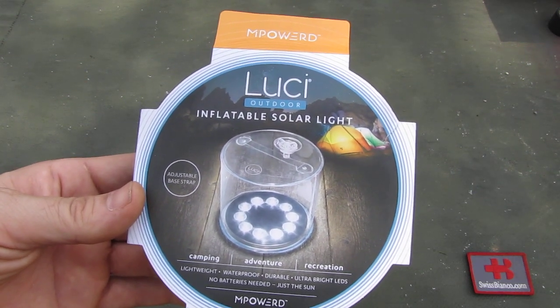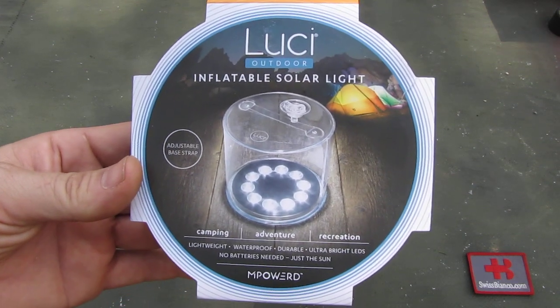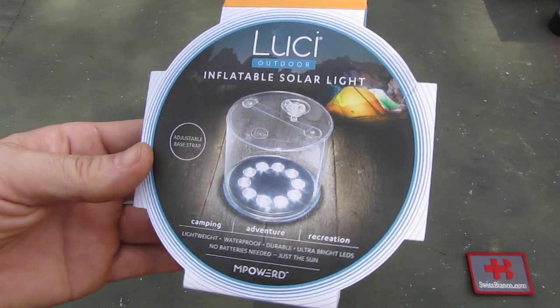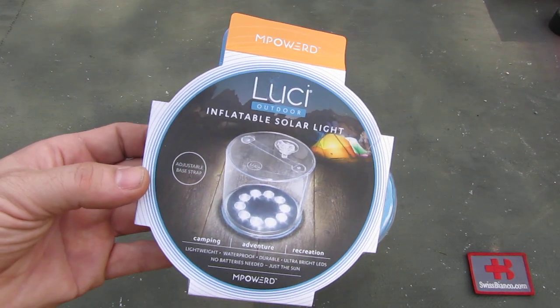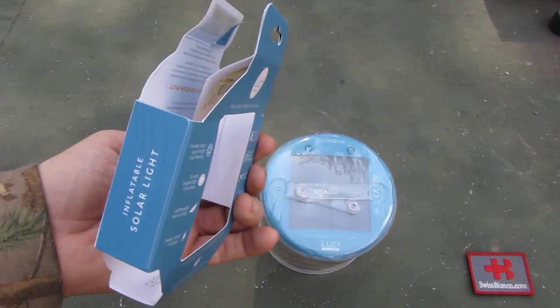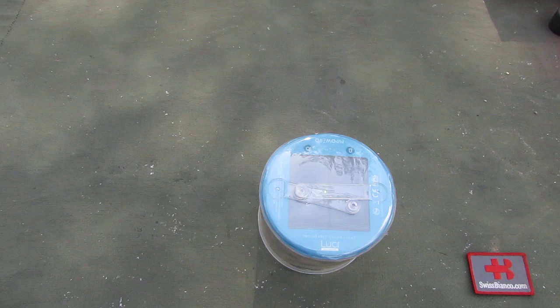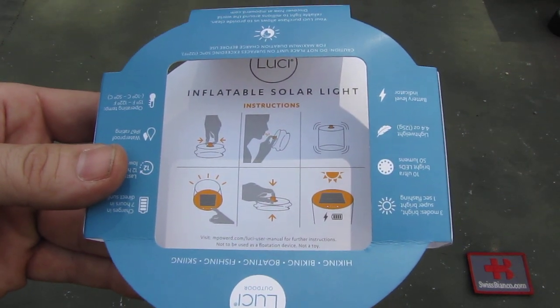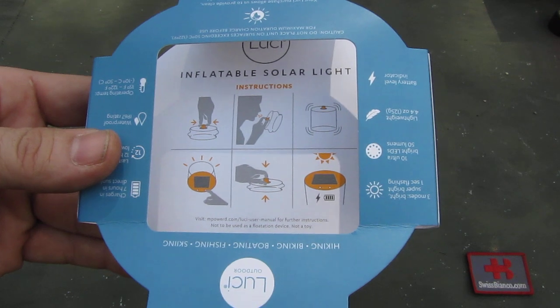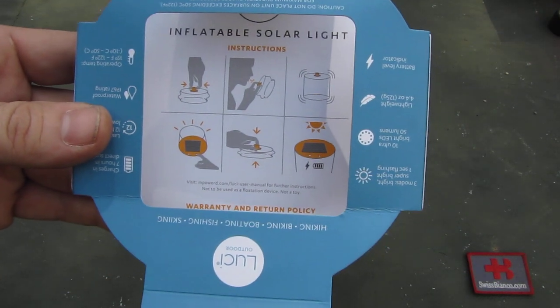We see here some more information. That's the packaging. That small is the size, about an inch, how small you can get it as the air is out. Inside we see some more information on how to blow it up. That is really easy to fill with air and how it works.